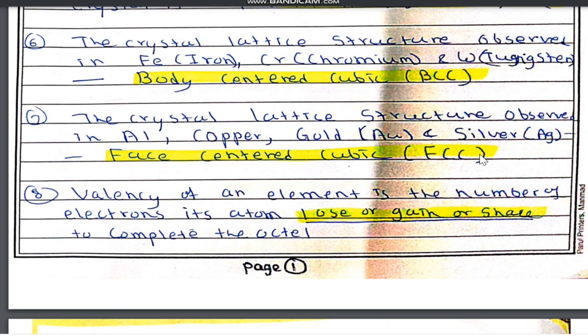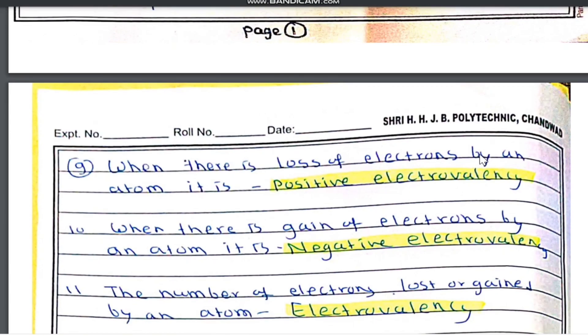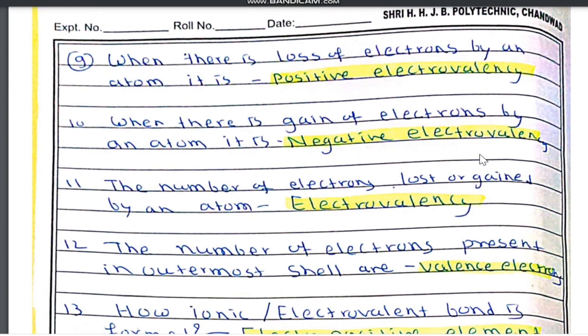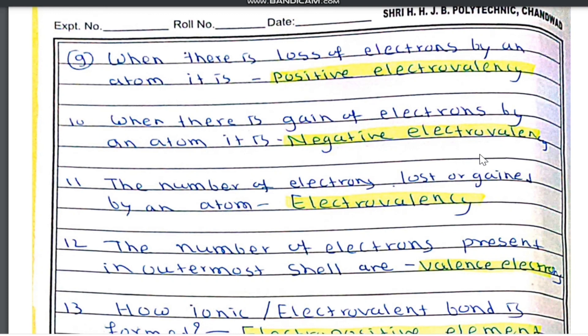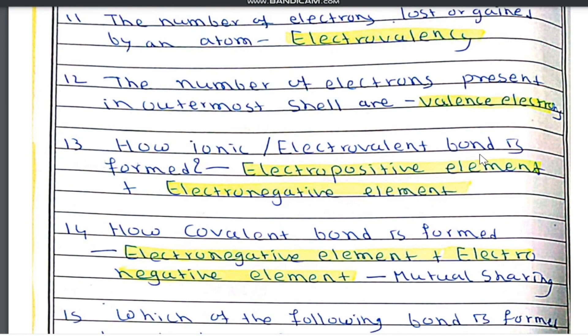Valency of an element is the number of electrons its atom loses, gains, or shares to complete the octet. When there is loss of electrons by an atom, it is known as positive valency. When there is gain of electrons by an atom, it is known as negative electrovalency. The number of electrons lost or gained by an atom is known as electrovalency, which has positive and negative types.